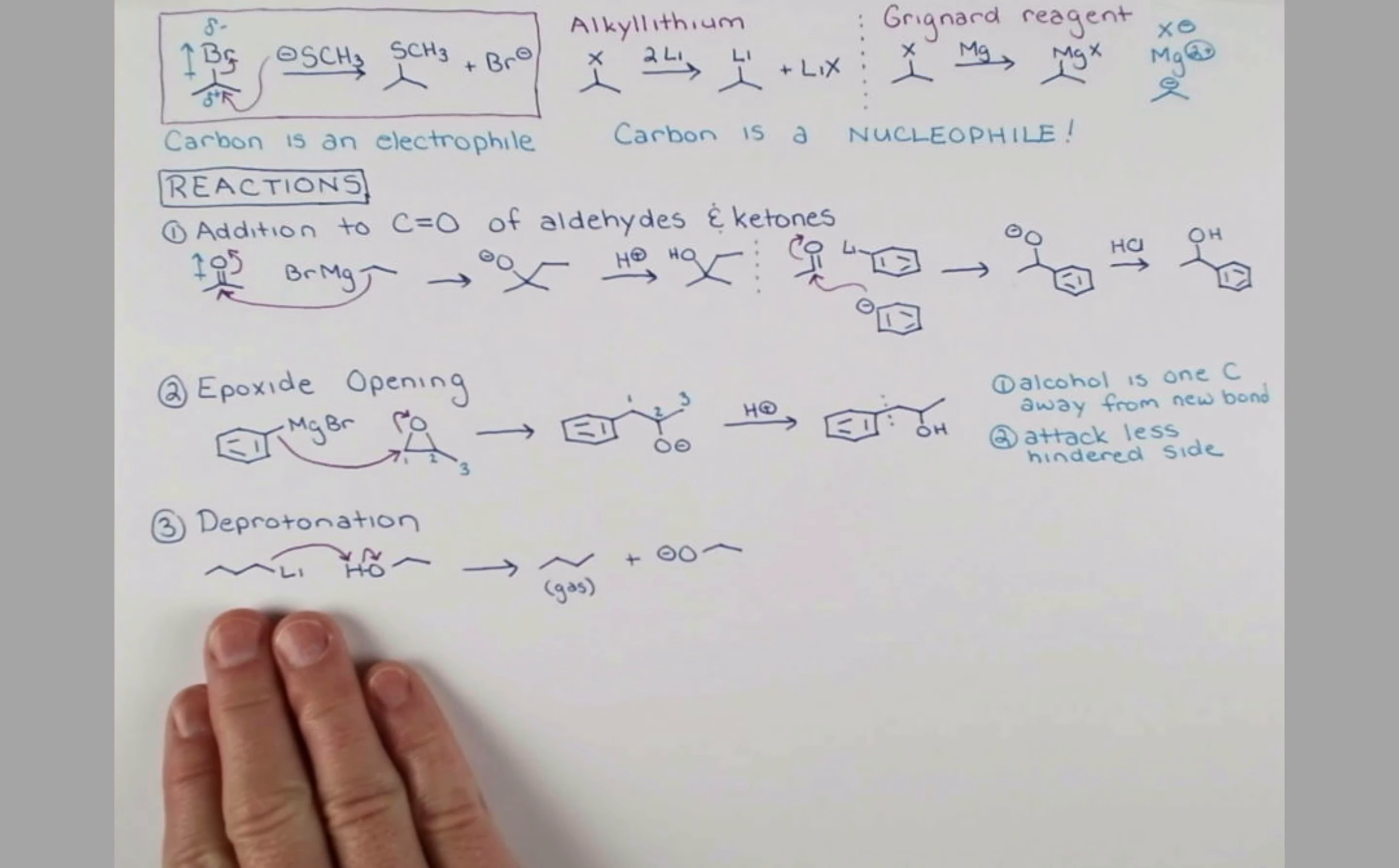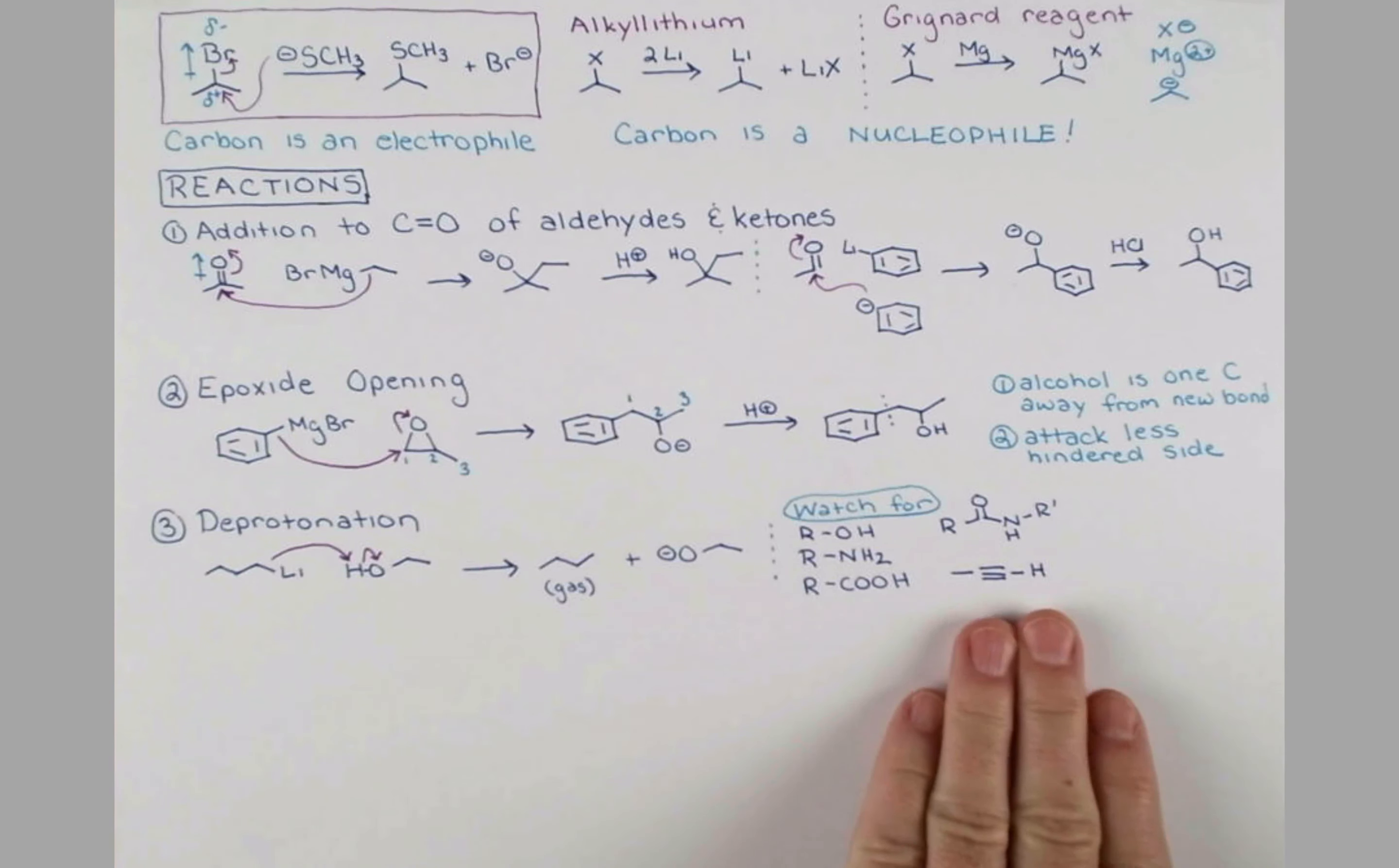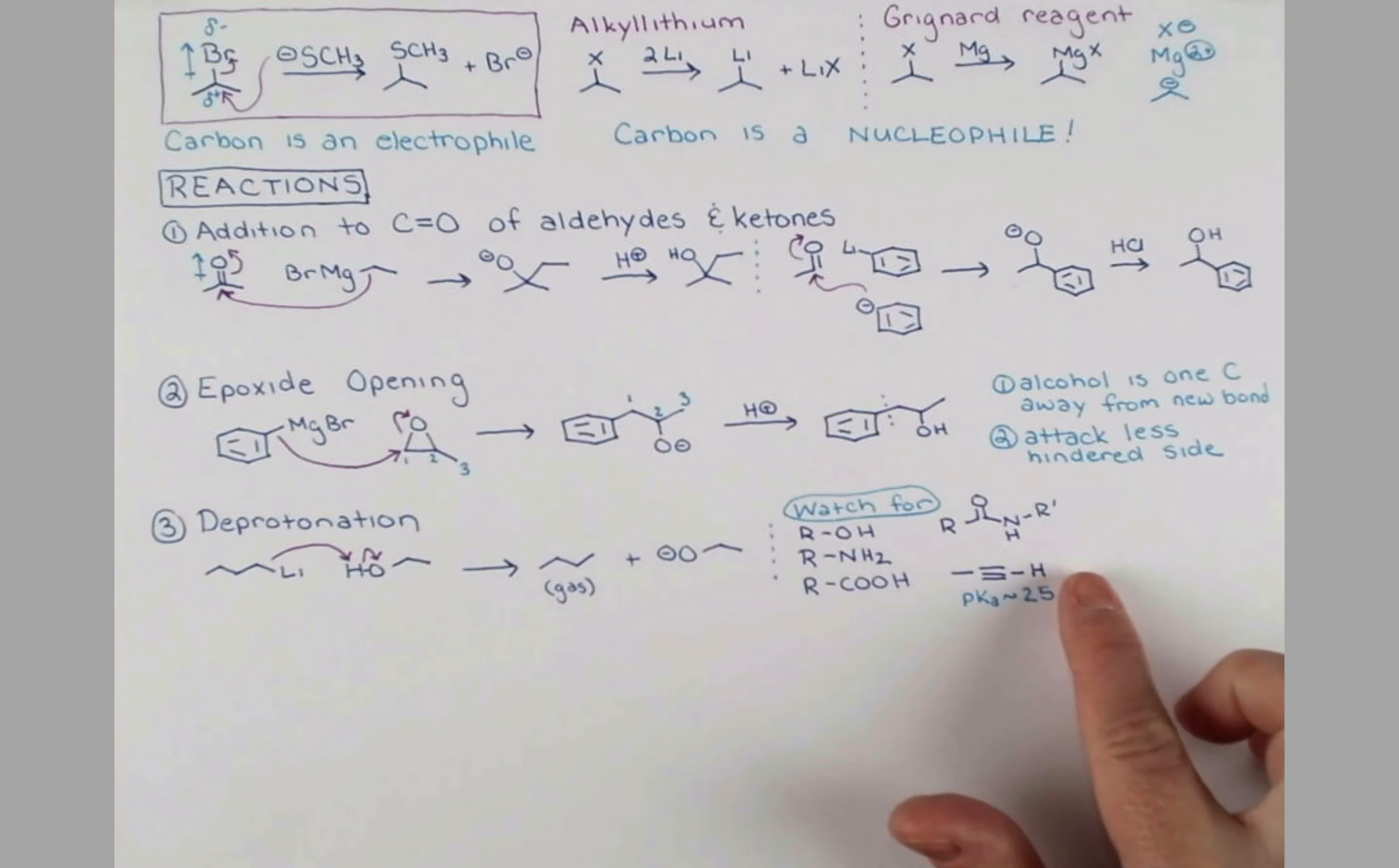Now there are cases where we use Grignard reagents to deprotonate something and use that as a nucleophile. But with something like an alcohol, we could deprotonate this with sodium hydride. Usually these are groups that we want to watch out for in our molecule to make sure the Grignard is actually making a carbon-carbon bond and not just deprotonating something. Some of the groups that Grignards will deprotonate are alcohols as we just discussed, amine groups, carboxylic acids, amides containing an acidic proton on the nitrogen, and then one that you might not expect as much, terminal alkynes. This proton here has a pKa of about 25. The conjugate acid of our Grignard, butane, has a pKa around almost 40, and so the Grignard reagent is sufficiently basic enough to take off this proton here.